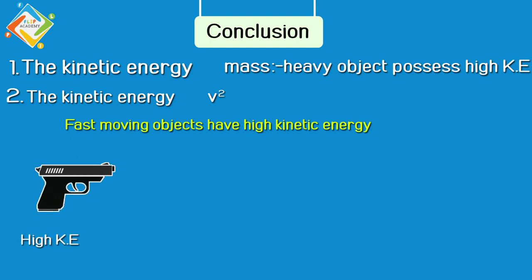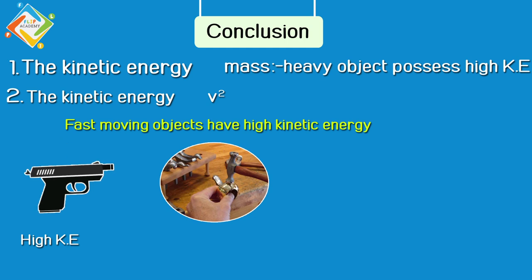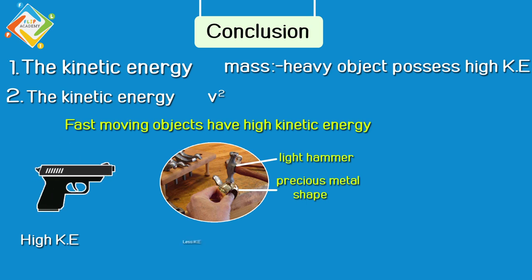For this reason, if we have to do some light work, our hammer should be very light. Like if we talk about a goldsmith, to design precious metals, the hammer is very light. They cannot use a heavy hammer because the lighter the hammer, the lower the kinetic energy.